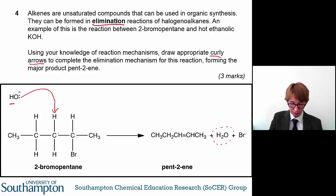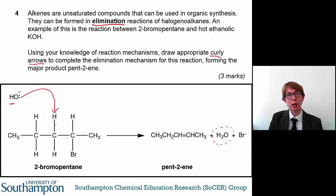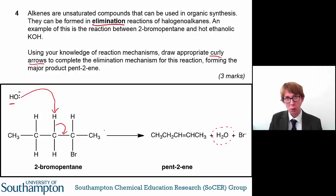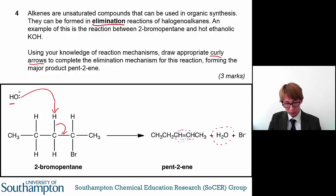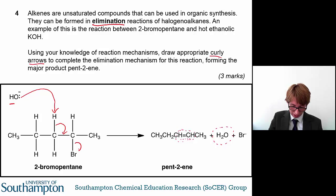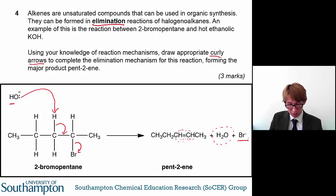What happens next is that this bond between the carbon and the hydrogen has to break, and it will form a new double bond. You can see this in the molecule pent-2-ene — you've now formed a double bond, a pi bond, in the molecule. So now you form this double bond from the movement of that pair of electrons, and the bromine will leave as a bromide ion, Br⁻, leaving the molecule.